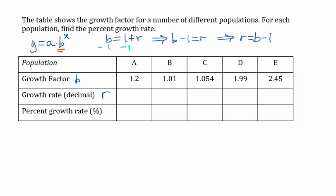So given a growth factor of 1.2, 1.2 minus 1 is 0.2, and multiply by 100,